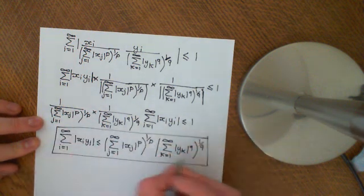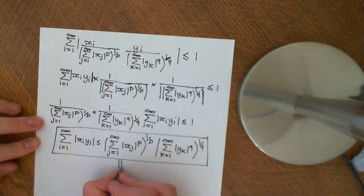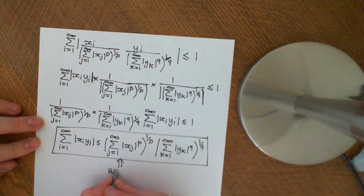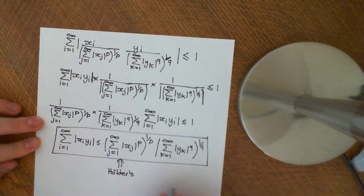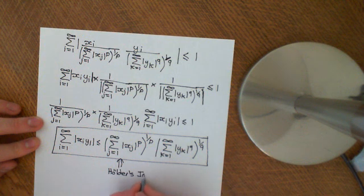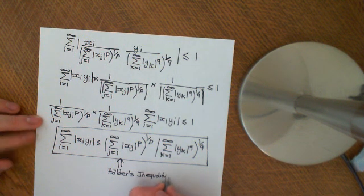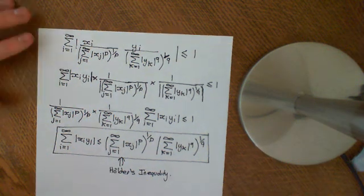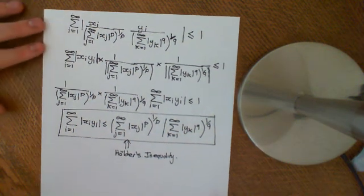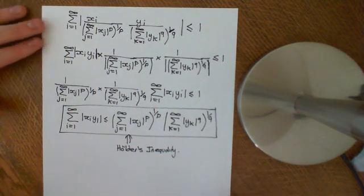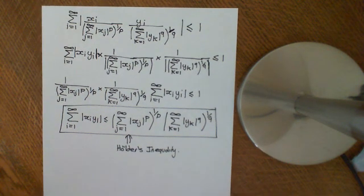So there we have it — Hölder's inequality, which we will use in the derivation of Minkowski's inequality.